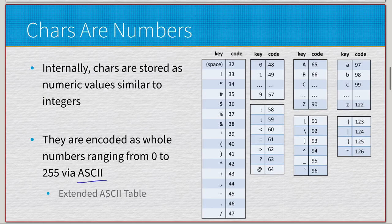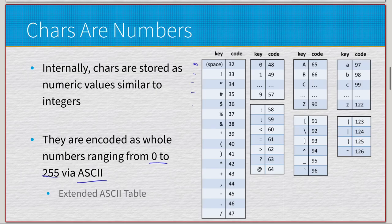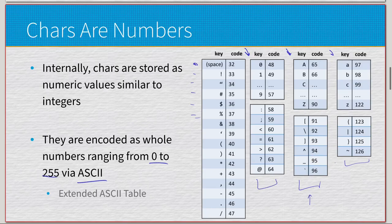These are all stored as numeric values. You might know this as ASCII. Internally, chars are stored as numeric values similar to how integers are - they're a much smaller data type, a single byte, so they range from zero to two hundred fifty-five. The ones we care about are special characters like space, exclamation mark, quotations, hash, dollar sign, percent sign, ampersand, etc., then numerical digits zero through nine, capital letters A through Z, lowercase letters a through z, and some math and relational operators.